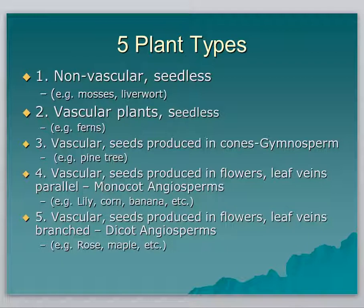Another category of plants — not too large a category — are plants that now have vascular systems but still don't produce seeds. Ferns are the easiest example. They have a vascular system and can move water from their roots up to their stems and leaves through a system of pipes called xylem and phloem. But they still don't produce seeds — they produce spores. If you look on the backside of a fern, there are little brown fuzzy spots where spores are made. So think of them as vascular plants that are seedless — category two.